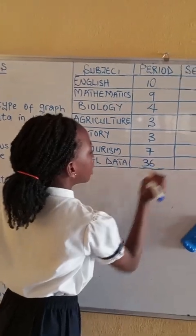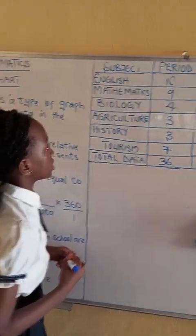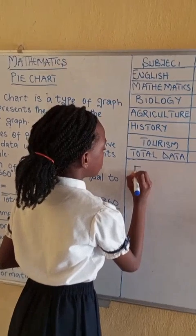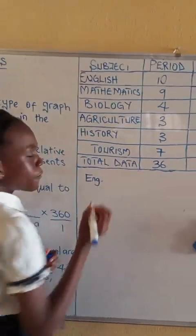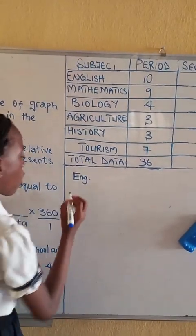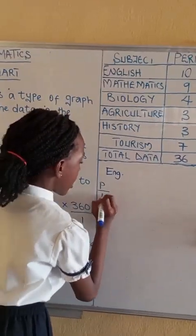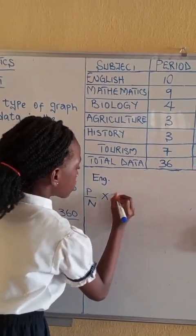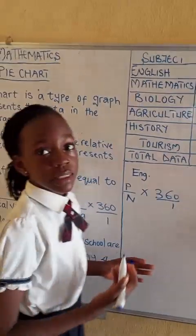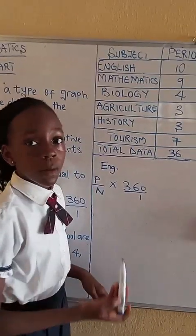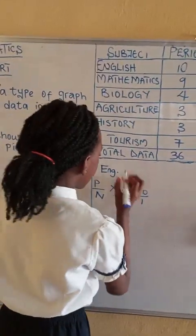First of all we have a formula P over N times 360 over 1, where P is a period and N is the number of period, the total sum of period.